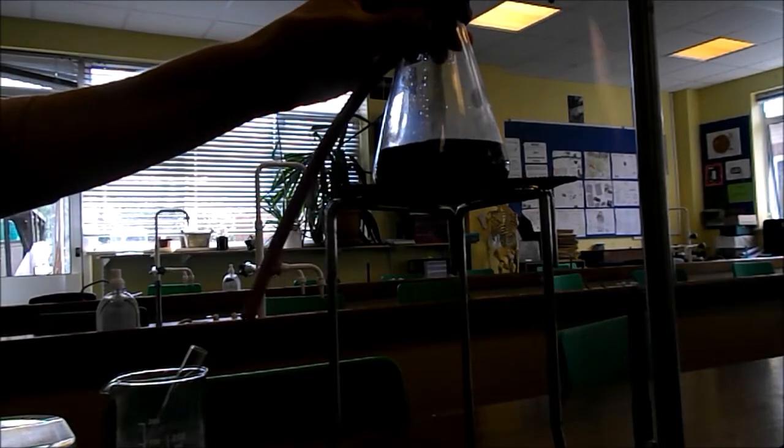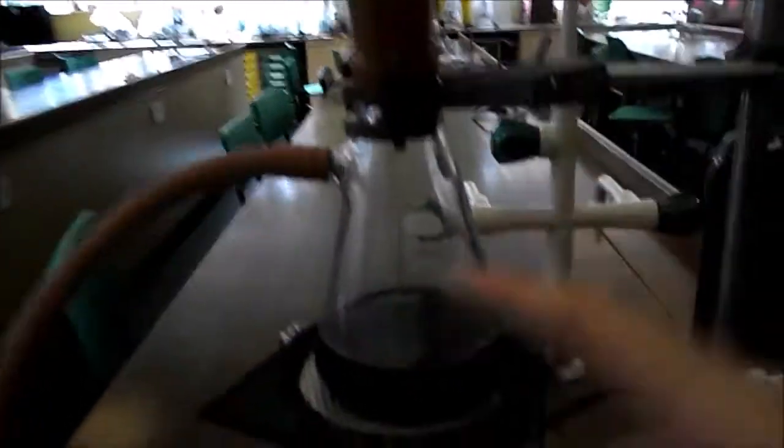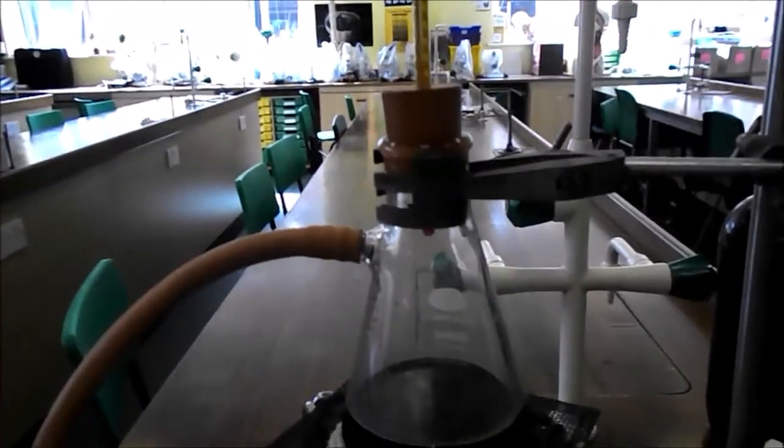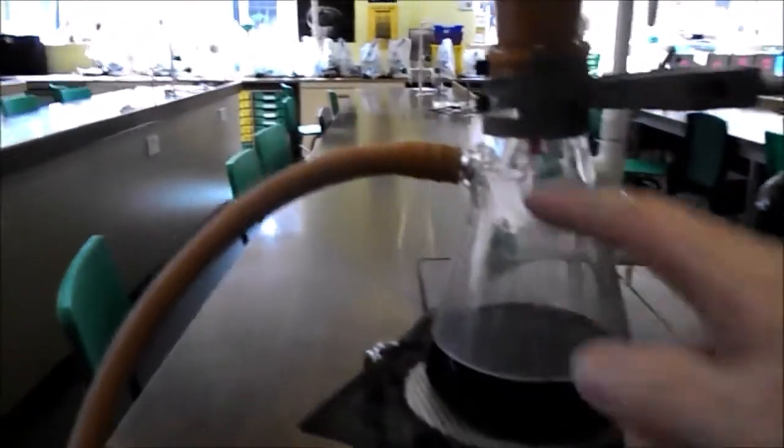We're going to put the bung on the top there so that's all nicely clamped. We can see we've got our thermometer in the top, we've got our ink down here, and that's clamped nice and steady.